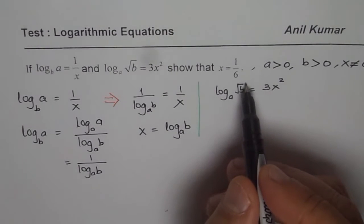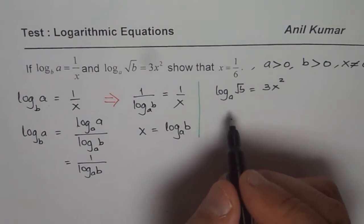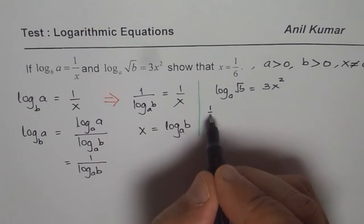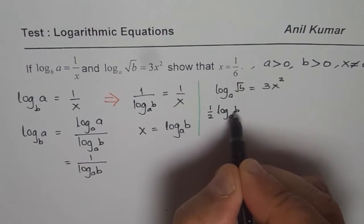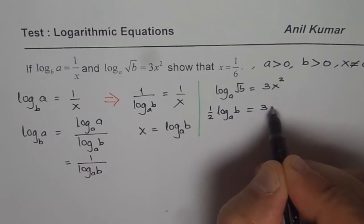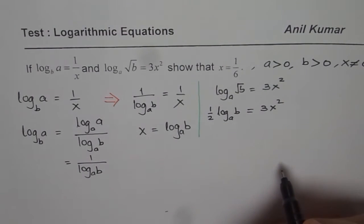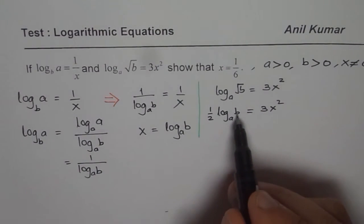Square root means half, so b to the power of half. So I could write this as half log a of b equals 3x square. So that is how I can write this.